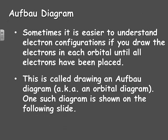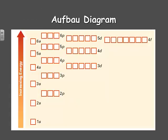Sometimes it's easier to understand electron configurations if you draw the electrons in each orbital until all electrons have been placed. We don't want to draw them as actual pictures of the orbitals — they get pretty complex. But we can depict an orbital with a line, circle, or box and draw electrons in that. This is called drawing an Aufbau diagram, or sometimes just an orbital diagram. Going up through the 6P sublevel, each orbital is organized into sublevels, and you can put two electrons in each box because each orbital can hold up to two electrons.